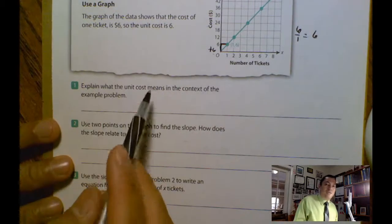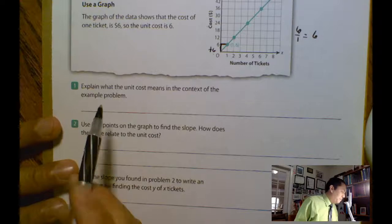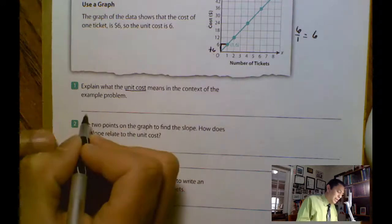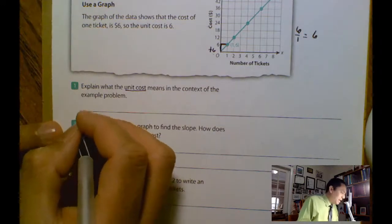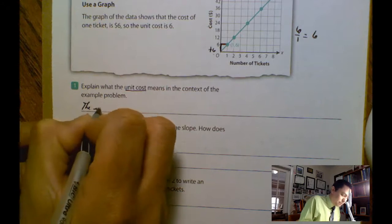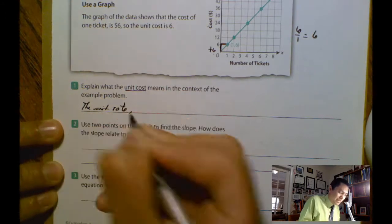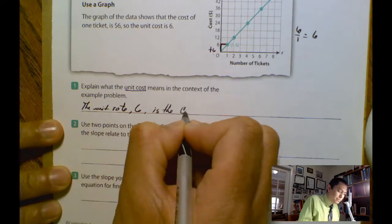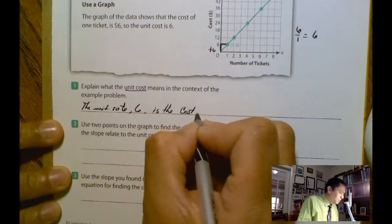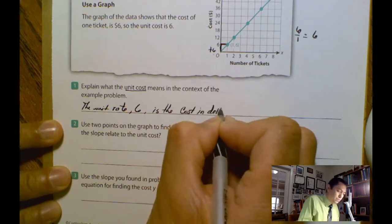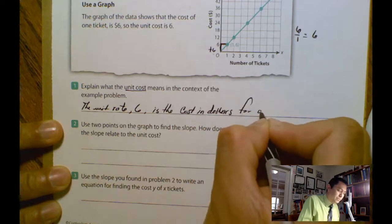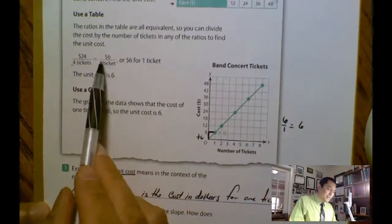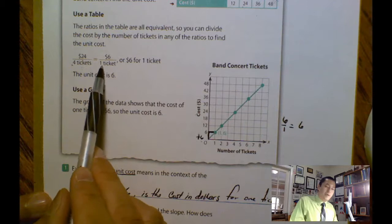Now let's answer the questions. Explain what the unit cost means in the context of the example problem. Remember, we were talking about the unit cost. So in this case, we're going to say that the unit rate is 6, the cost in dollars for one ticket. That's what it means.